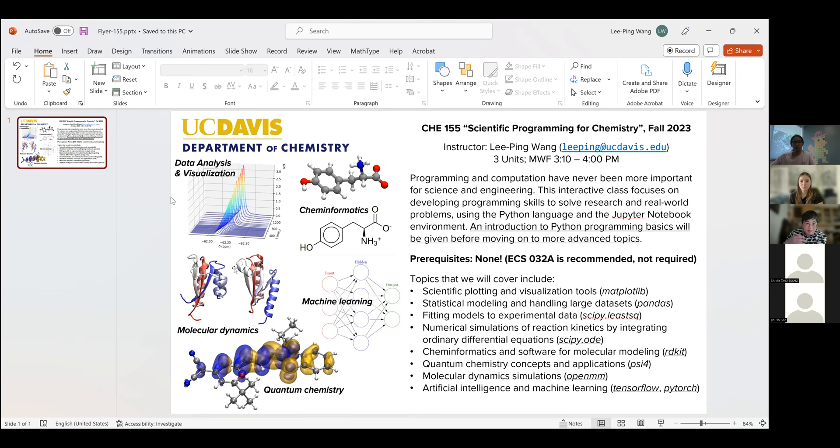Then there are some more direct applications of programming to chemistry. These topics include cheminformatics—how you represent molecules on a computer either in terms of just the chemical bonds and atoms or as three-dimensional structures—and also two important classes of calculations in computational chemistry: quantum chemistry and molecular dynamics. We're going to spend about two or three weeks total on these two topics.